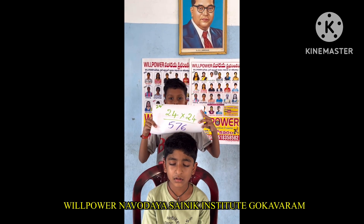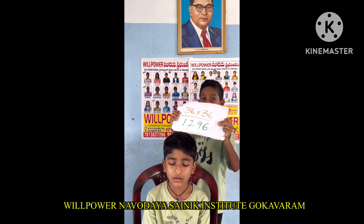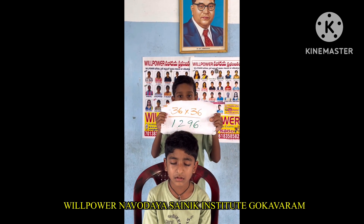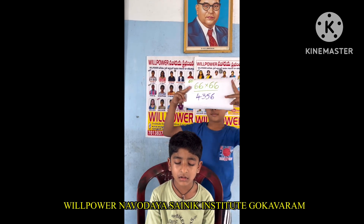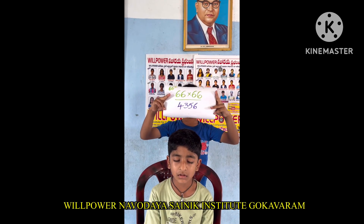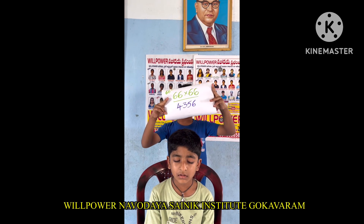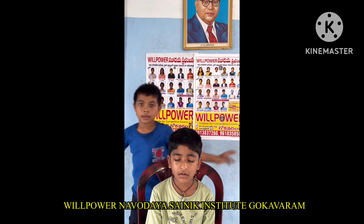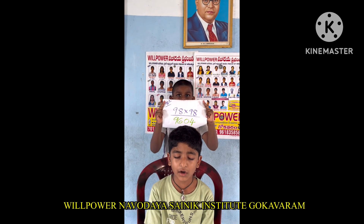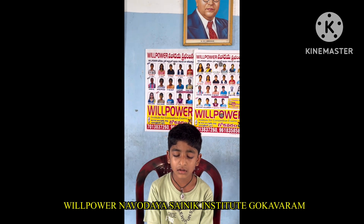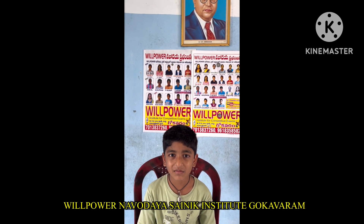24 square: 24 into 24 — 576. Good. Next. 36 square: 36 into 36 — 1296. Okay, good. Next. 66 square: 66 into 66 — 4356. Good. Next. 98 square: 98 into 98 — 9604. Okay, good. Finish. Please Like, Share and Subscribe.